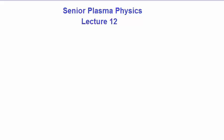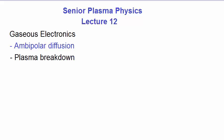Senior Plasma Physics, Lecture 12. We continue looking at diffusion in gaseous discharges, in particular, ambipolar diffusion, which is a type of diffusion that is only found in plasmas. We then examine how a plasma actually starts, known as plasma breakdown. Finally, we examine Paschen's law, which is the equation that determines the breakdown voltage required to produce a plasma.